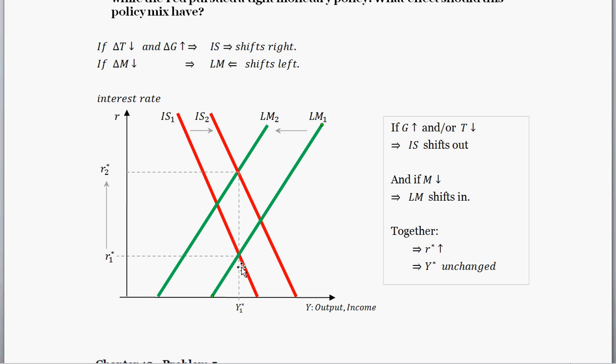So if we were to combine those two policy mixes together in the IS-LM diagram framework, we get the following. We're starting off at this equilibrium right here with R star sub 1 and Y star sub 1. The shift outward in the IS curve from IS1 to IS2 is reflecting either the decrease in taxes and expansion in government spending. And then the second part here is the shift inward of the LM curve from LM sub 1 to LM sub 2.